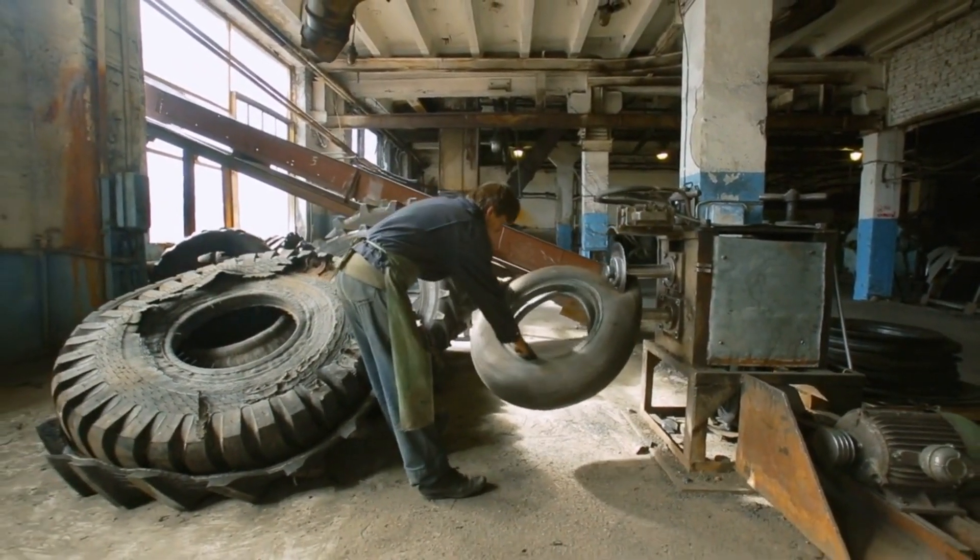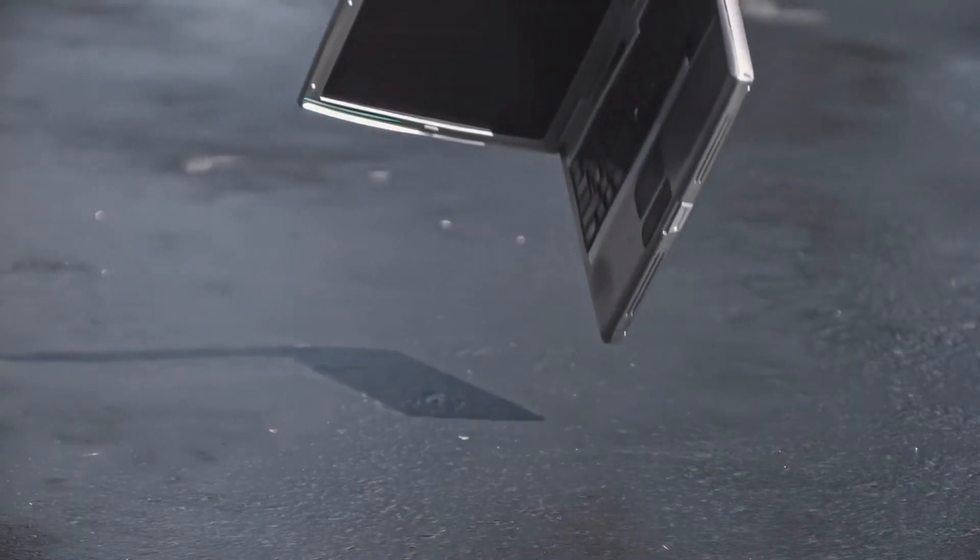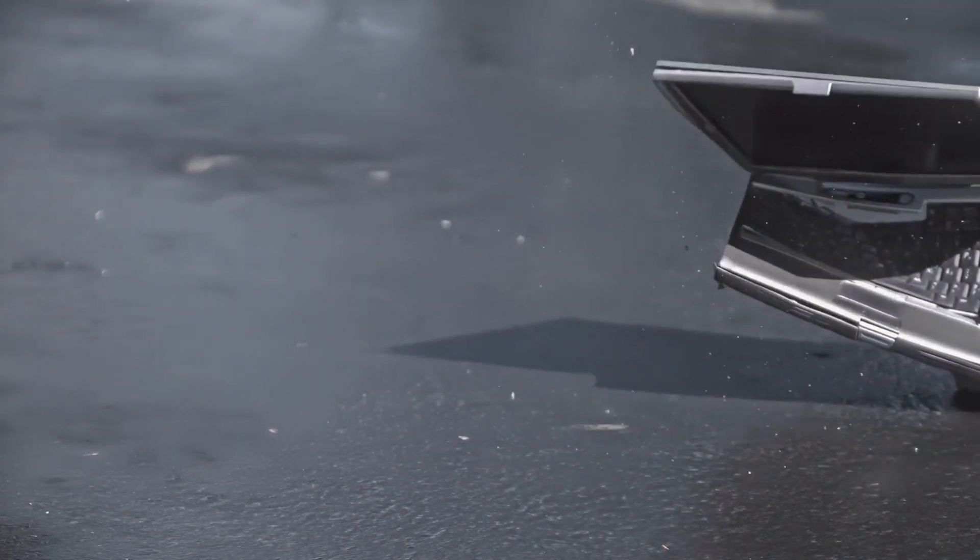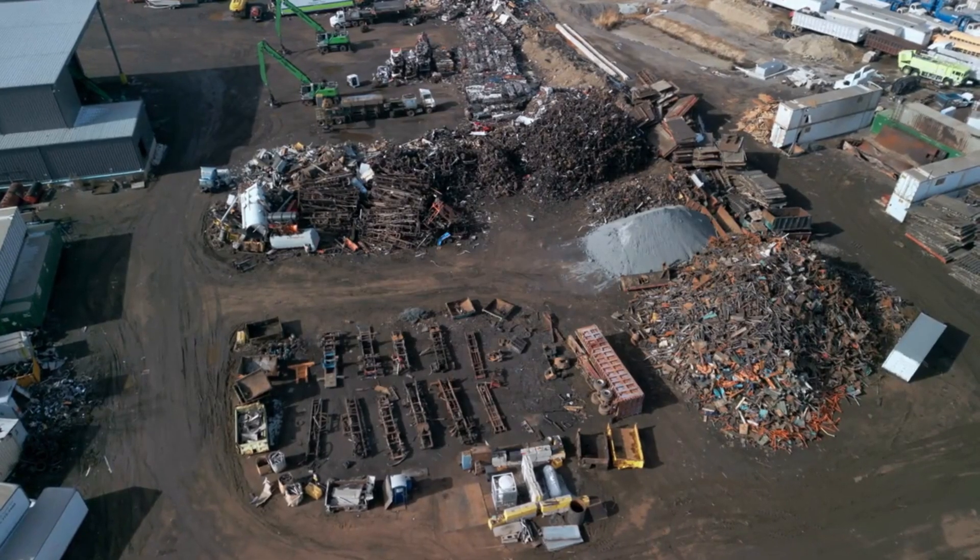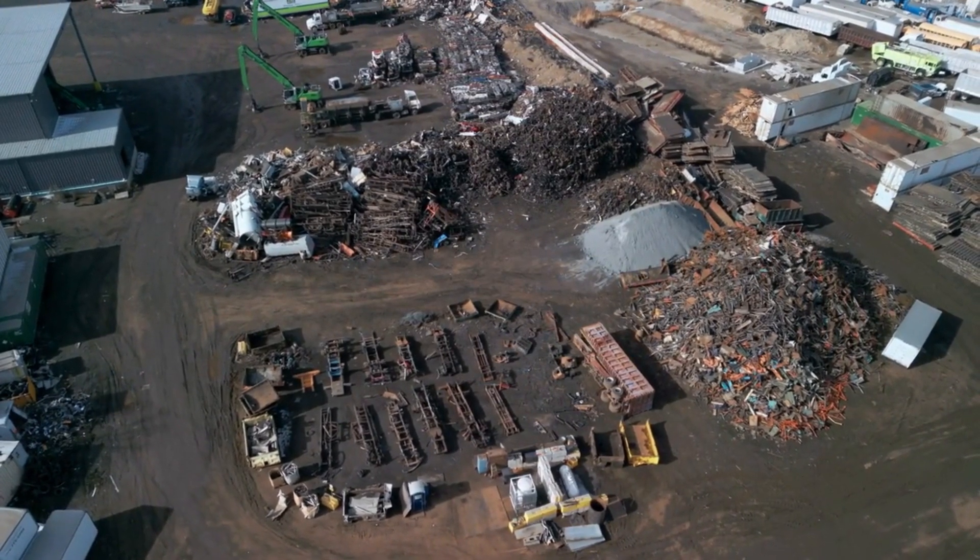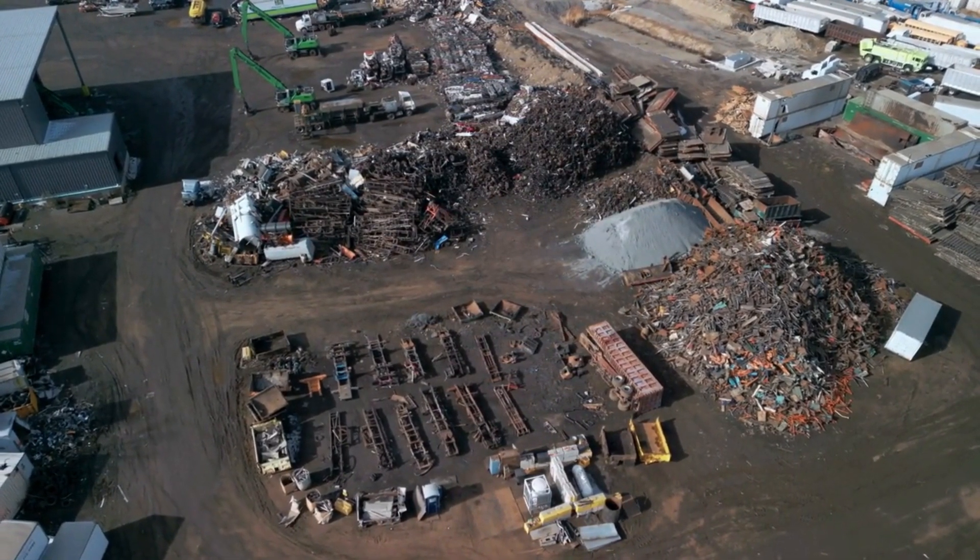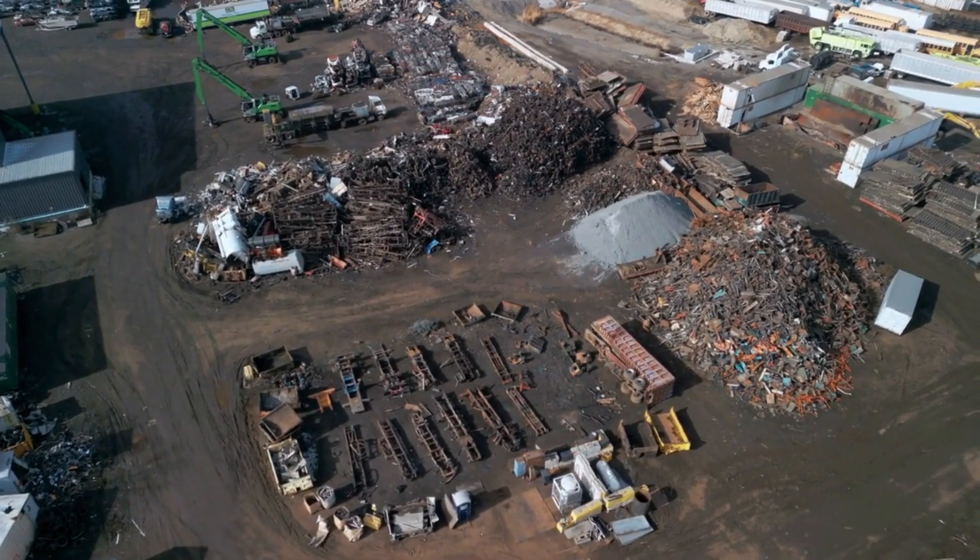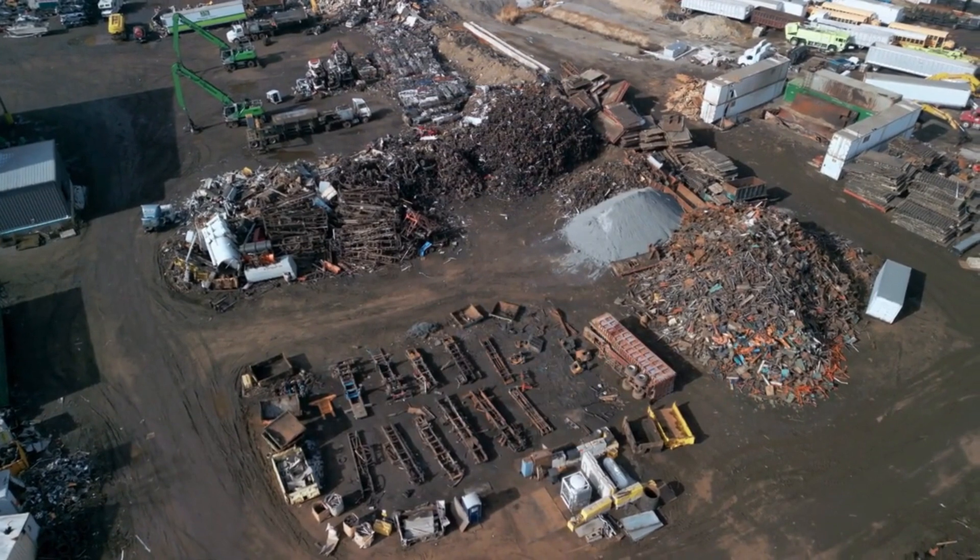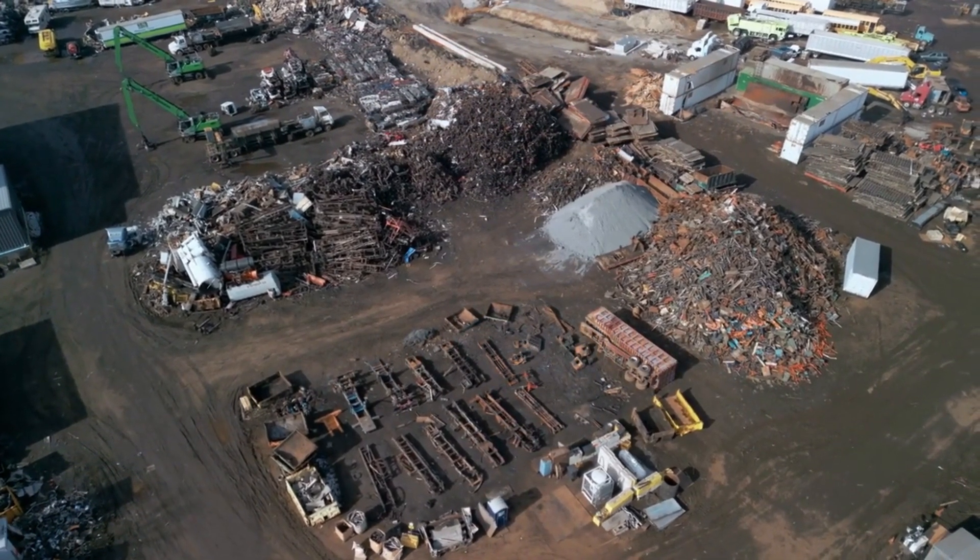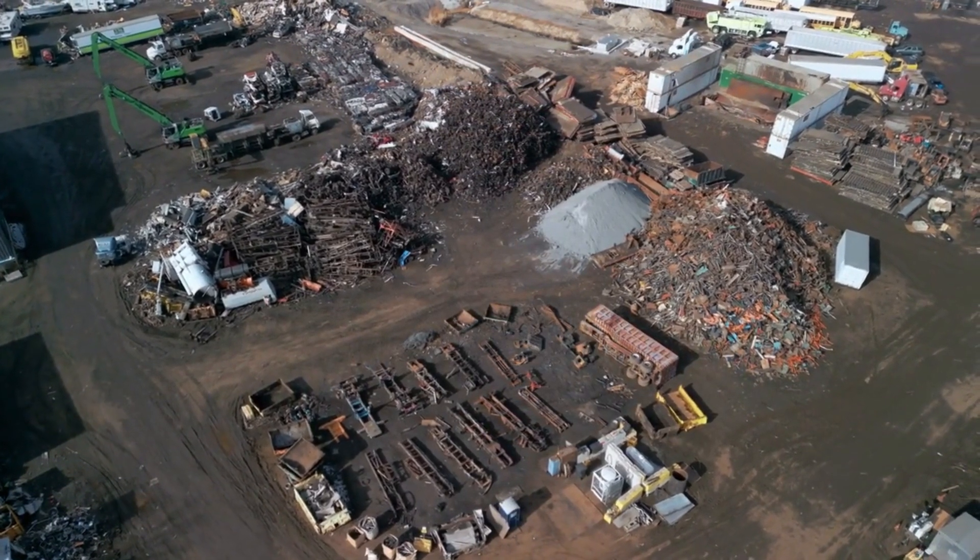Currently, the primary sources of feedstock for recyclers are cells from consumer products like laptops and scrap from battery plants. However, the projection is that production scrap will constitute 53% of recyclers' feedstock in 2025, but decrease to 43% by 2030, 14% by 2035, and just 6% by 2040, as the global electric vehicle fleet is expected to surge to 350 million vehicles by the end of the decade, according to the International Energy Agency.